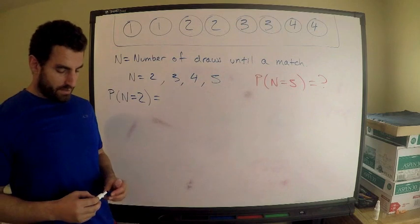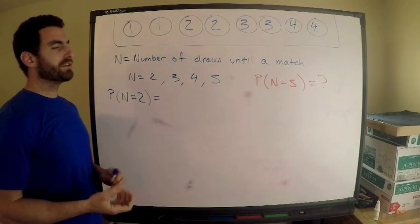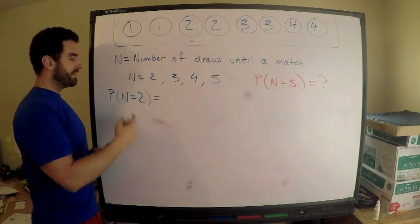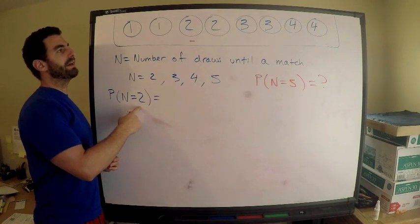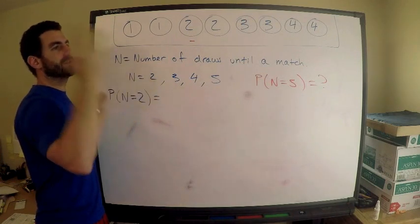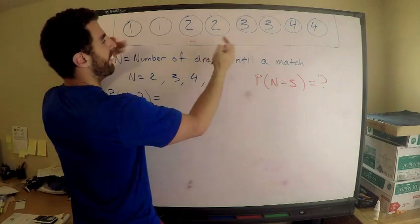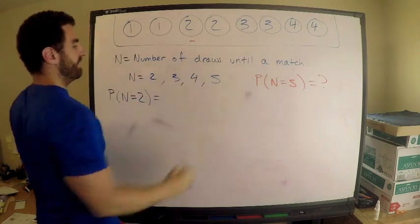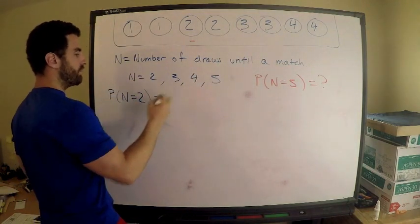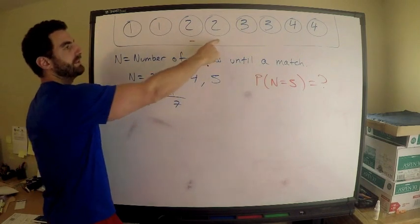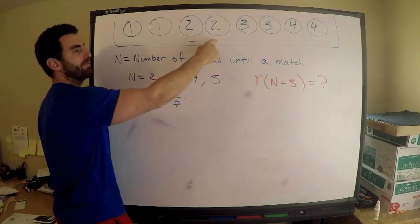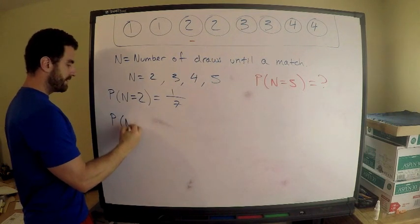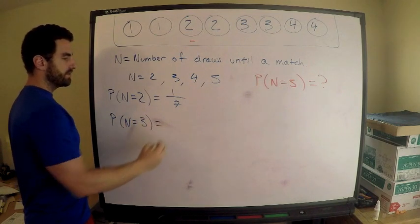What's P(N=2)? I draw two socks and get a match. It doesn't matter what I draw first. If I want to get a match on the second draw, I need to draw the one sock that matches the first. There are seven socks remaining and only one correct choice, so P(N=2) = 1/7.